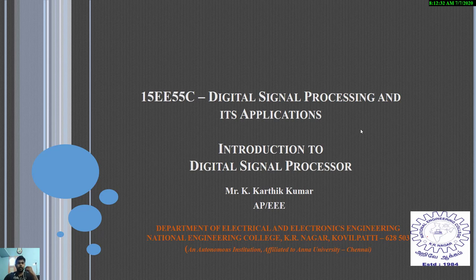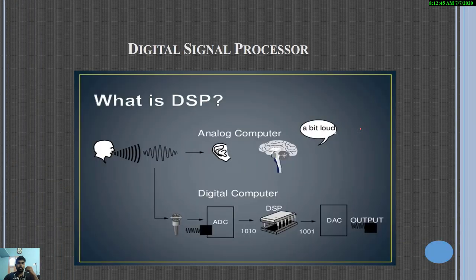Hi all, myself K. Karthik Umar. In this lecture video we are going to see about introduction to digital signal processor. In the previous video we have seen about digital signal processing. In DSP, there are two types of computer systems available: analog computer and digital computer.